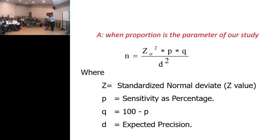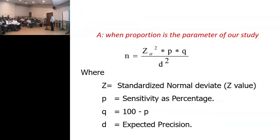For example, sensitivity is 80%, so 100 minus 80 is 20% — the complement. And Z alpha is the Z value, which is approximately 2. As shown in the normal distribution, 1.96 is roughly 2, and plus or minus 2 covers 95% of the area. So Z squared is approximately 4. People usually remember this formula as 4PQ divided by D squared, where D is your error or precision.